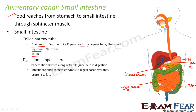The bile duct carries bile juice from the gallbladder to the duodenum. The pancreas has a pancreatic duct, which carries all the pancreatic enzymes to the duodenum. So the duodenum is where bile juice, pancreatic enzymes, and food from the stomach all meet.